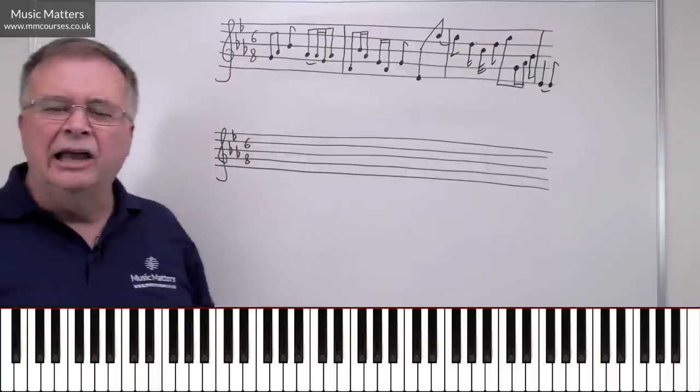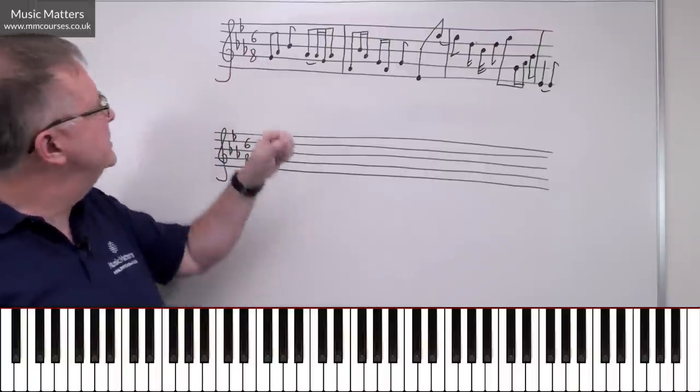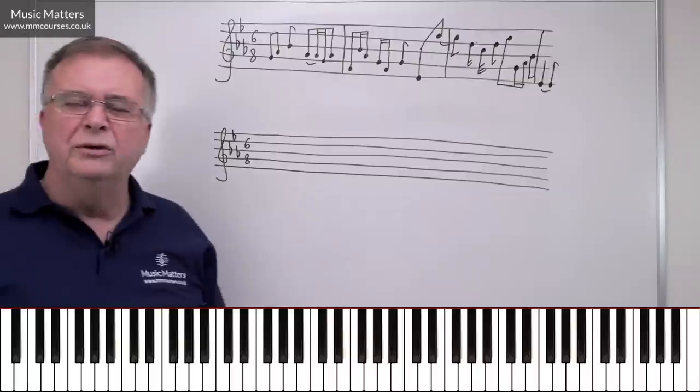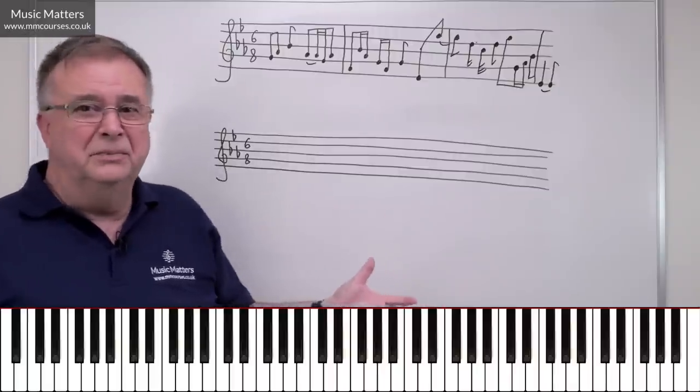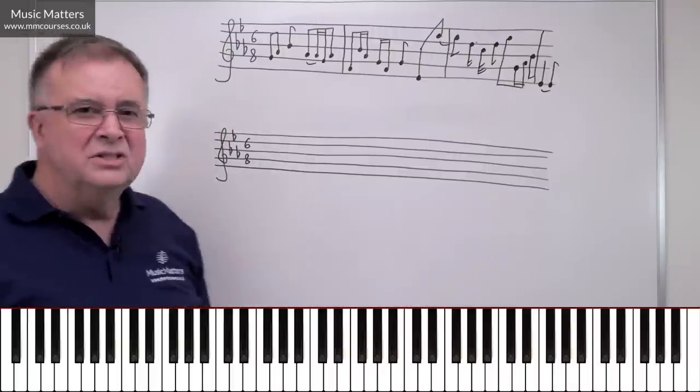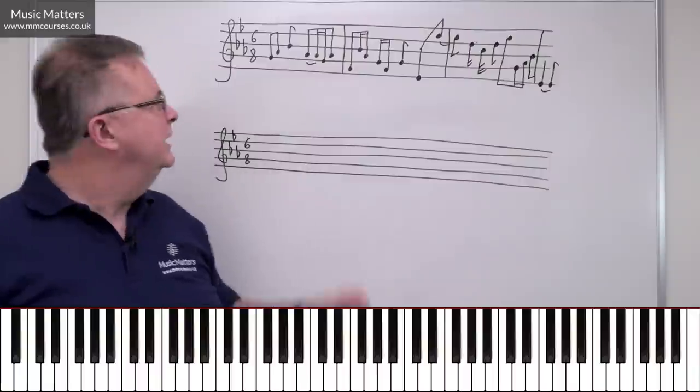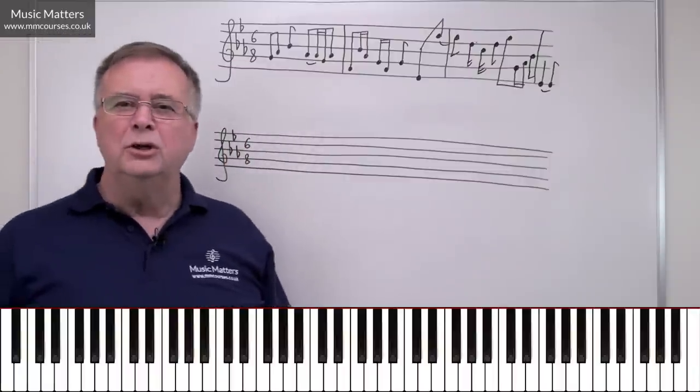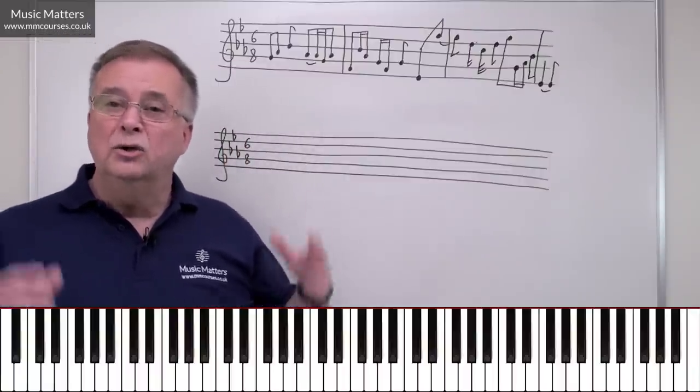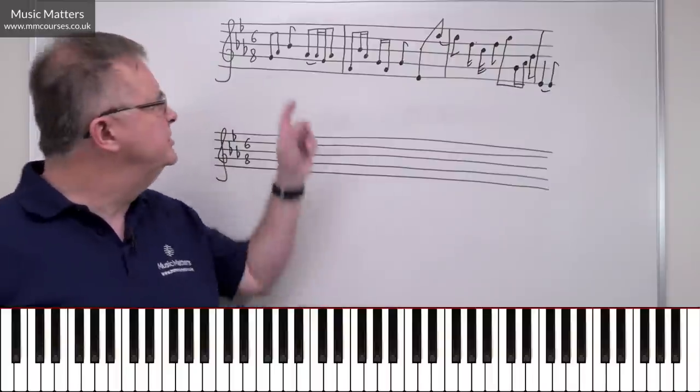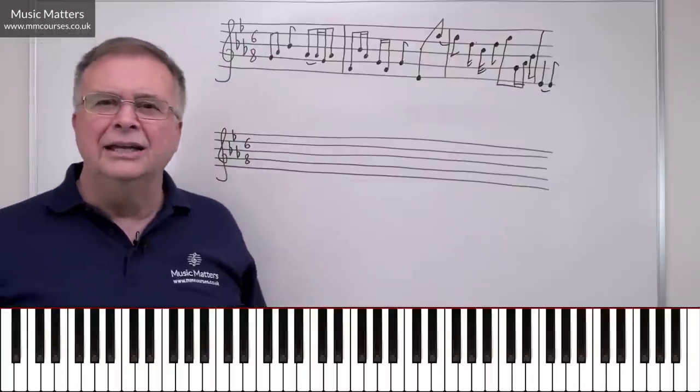Six eight is telling us something. Time signatures, remember, tell us the top number's saying what we've got in the bar. We've got six of something in the bar. The bottom number's telling us what those somethings are. Eight at the bottom, if you know your time signatures, is telling us that the units we're counting here are quavers, so six quavers in the bar.